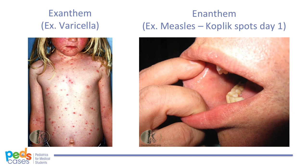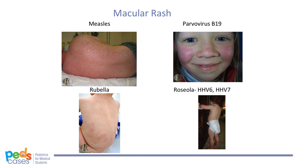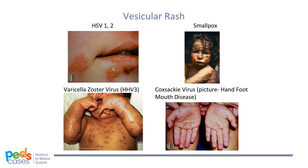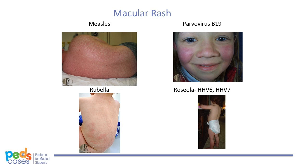We will start by defining some terms that are important to use when describing rashes. An exanthem is a rash involving the skin, whereas an enanthem is a rash involving mucous membranes. Some viruses will cause a macular rash, whereas others will cause a vesicular rash. A macule is a circumscribed flat lesion that has a different color than the surrounding skin — you cannot feel it when you run your finger over it. A papule is a small, solid, elevated lesion usually less than one centimeter in size. A vesicle is an elevated circumscribed lesion that contains fluid, usually less than one centimeter in size. It's important to know which viruses can cause which type of rash.